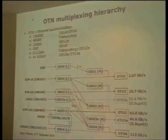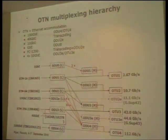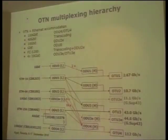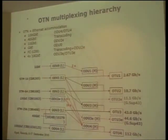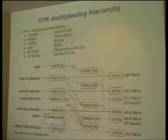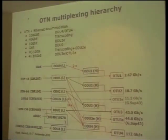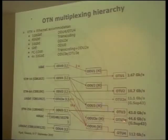Normal ODU is created for accommodation of SDH signals. Since Ethernet is slightly larger than SDH, we need another type of interface — the extension container. So the OTN hierarchy is very complicated.